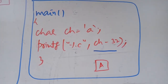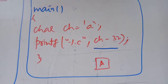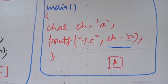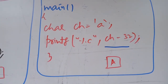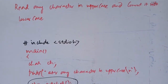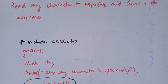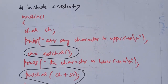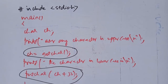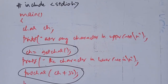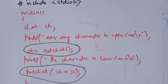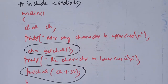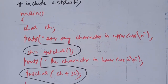Look at this program: ch minus 32. The difference between a capital letter and small letter in ASCII value is 32, so small 'a' minus 32 gives capital 'A'. To read any character in uppercase and convert it into lowercase, observe the header file used here. The program is written with getchar and putchar. Any capital letter plus 32 gives a small letter.